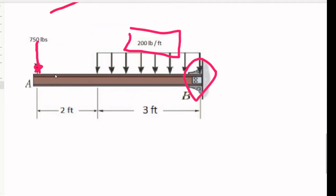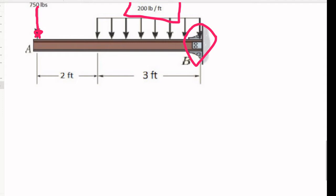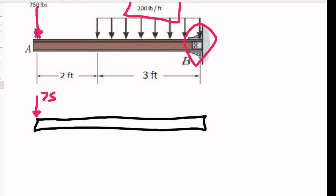So first things first, let's draw a quick free body diagram of this sucker here. Okay, so got our beam, 750 pounds. Got the 200 pounds per foot distributed section.